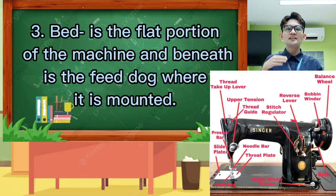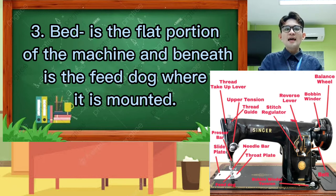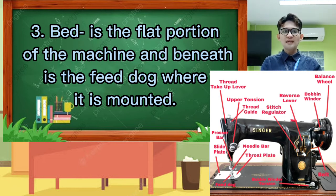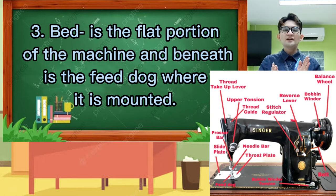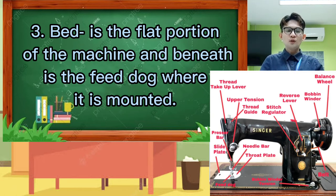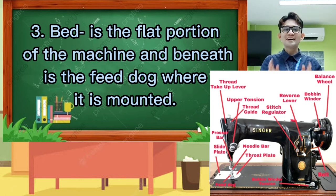And lastly, the bed is the horizontal part where the machine is placed and underneath the feed dog. It is where the shuttle and the lower thread are placed — the lower part of the sewing machine, which is the bed.